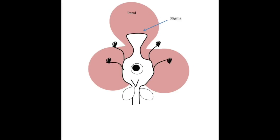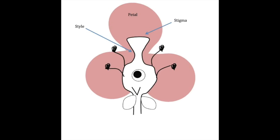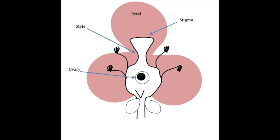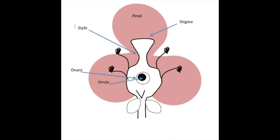The top of the vase is called the stigma. The stigma is sticky and holds pollen. The style carries the pollen down the ovary, which holds the ovule. The ovule produces the egg.